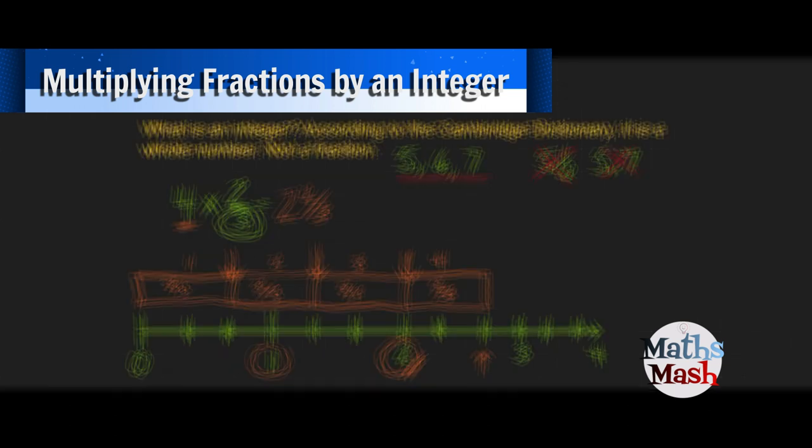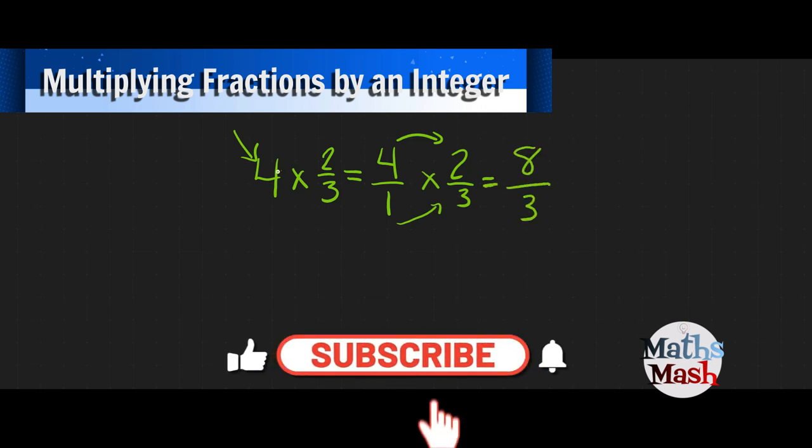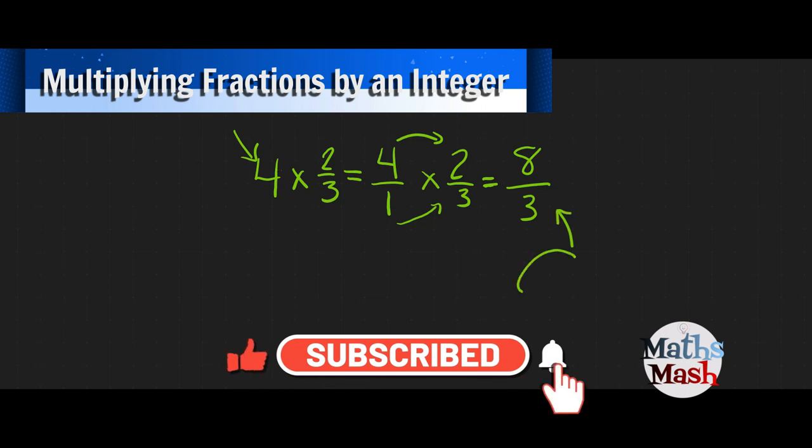You'll notice there's no spaces between the blocks. To do it without pictures, we can just do it mathematically like this: I take 4 times 2/3—4 goes over 1 multiplied by 2/3. I multiply 4 by 2, which gives me 8, and 1 times 3 gives me 3.